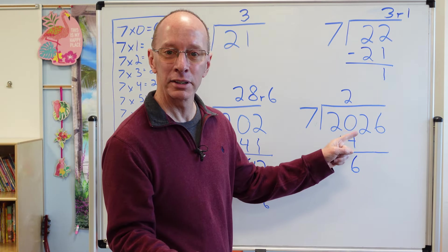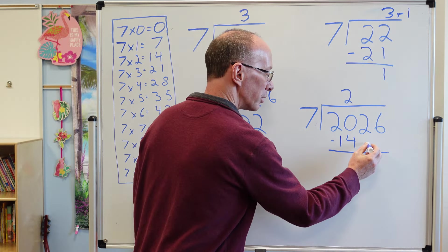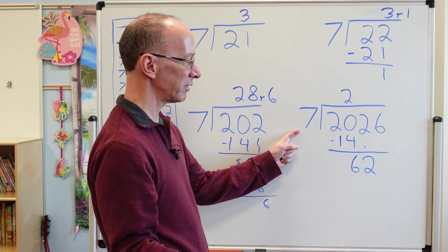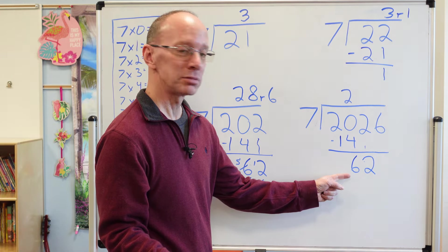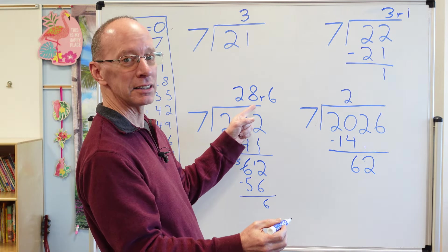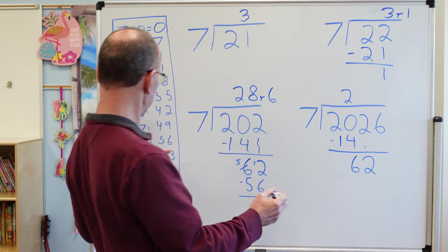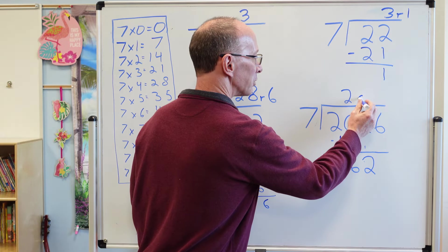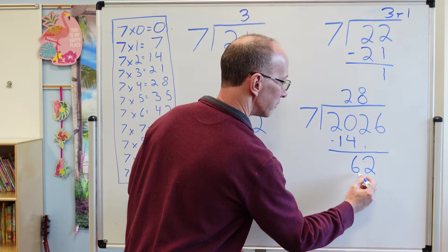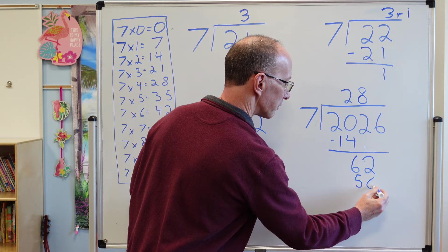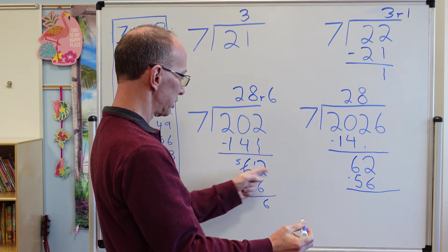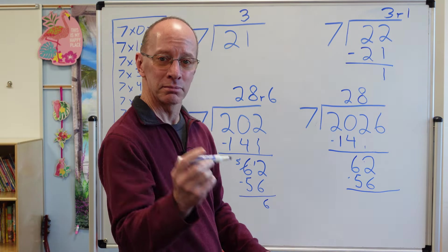Bring that next number down. Two. Right here. How many times can I put seven into 62? Eight times? Yeah. I think eight times. Eight times right here. Eight times seven. 56. We already did that, didn't we? Yeah. So 62 minus 56. Six.